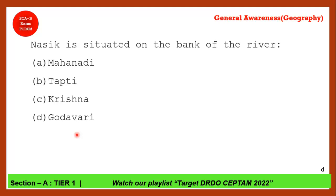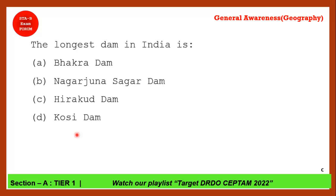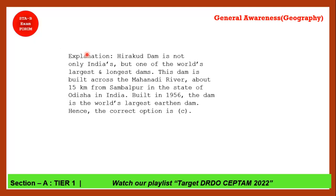Next question: What is the longest dam in India, and on which river is it located? The longest dam is Hirakud Dam, built on the Mahanadi river. The length of the dam is approximately 25 kilometers.